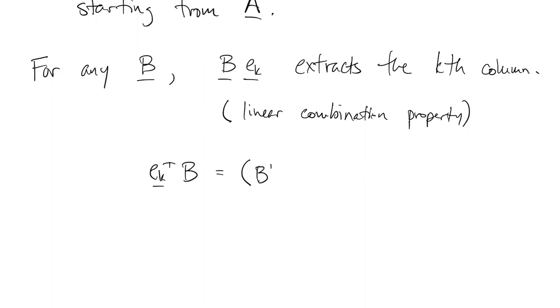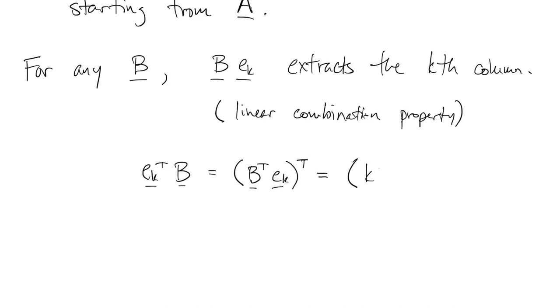Similarly, we can use transpose identities to show that the kth row of the identity on the left times B is actually the kth column of B transpose, transpose backed, which means it's actually the kth row of B. So if you multiply on the right by a column of the identity, you extract a column. If you multiply on the left by a row of the identity, you extract a row.